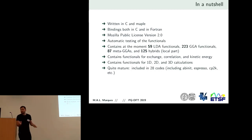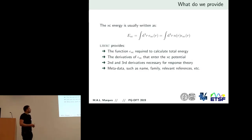What do we provide? What does a program need? So, the energy usually write it like this, the exchange correlation energy. This is the energy per unit particle. This is a function, it's a functional of the density, but in practice, it's a function of a one, two, three, four numbers. So, the density, the gradient of the density, the kinetic energy density, the Laplacian, depending on the family. So, LibXC will return this function that you need to calculate the total energy, and then the derivatives of this function that enter the exchange correlation potential. So, the first derivatives.